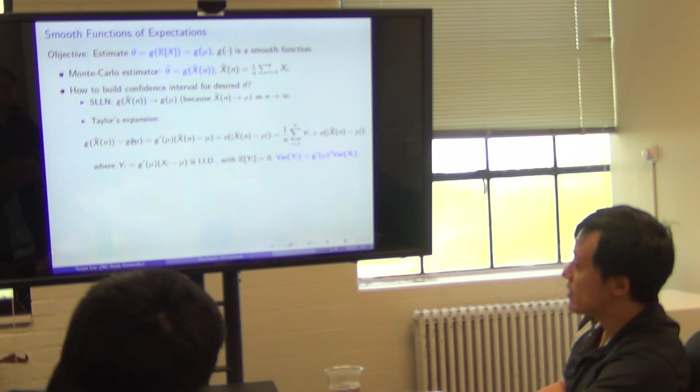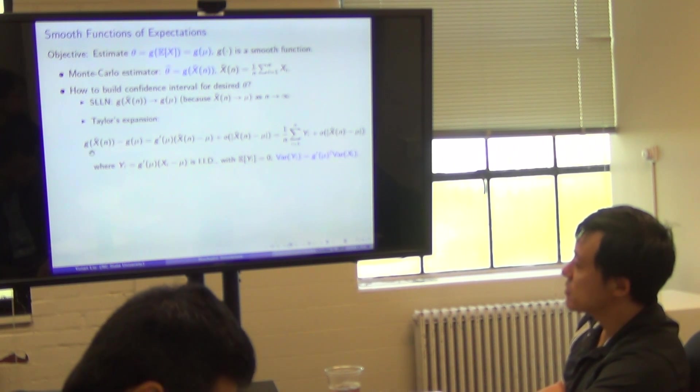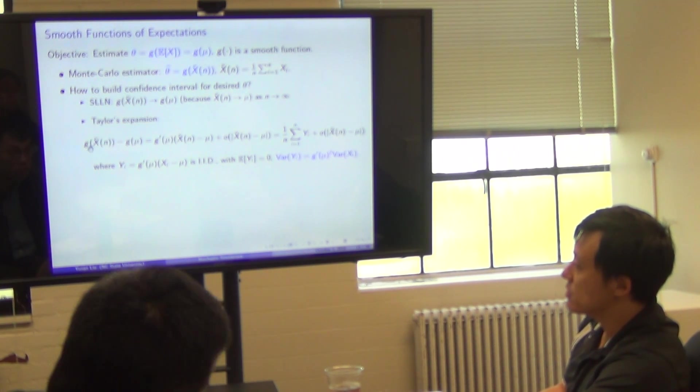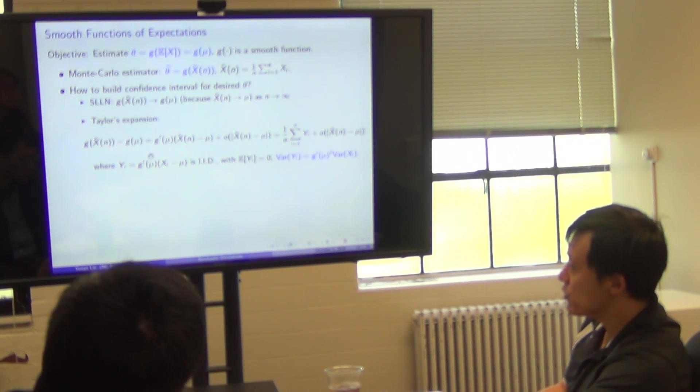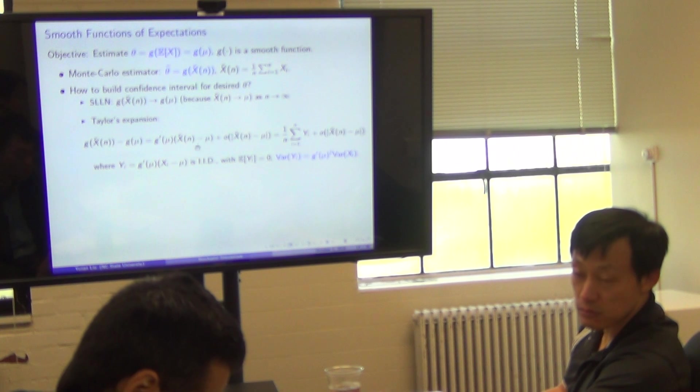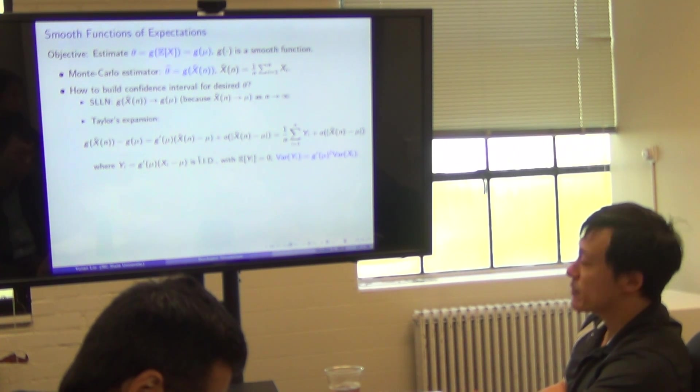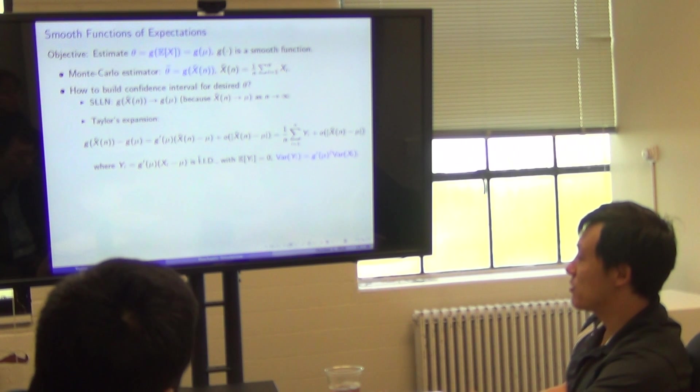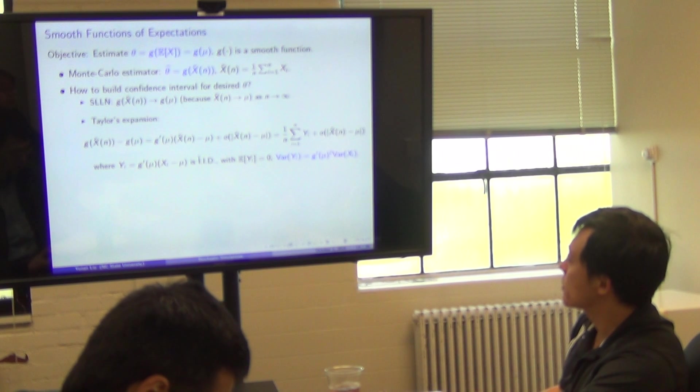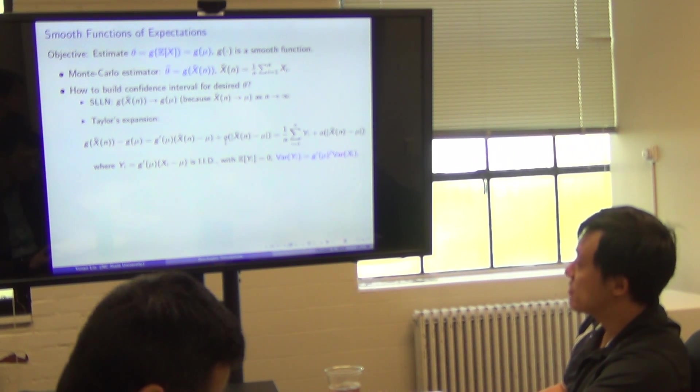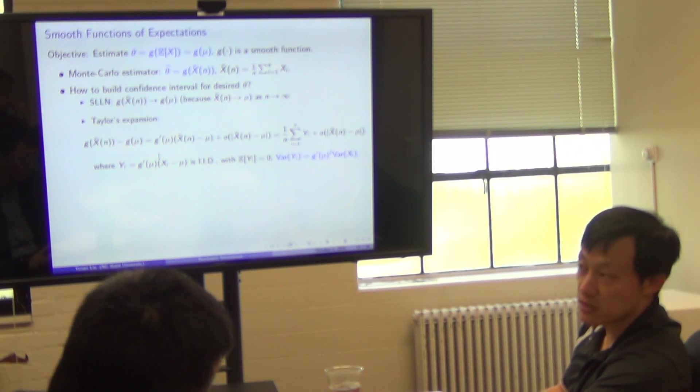So we know this guy and mu are very close when n is large enough. So let's apply Taylor's expansion for g function. We do Taylor's expansion at the point mu. So this guy is equal to, the difference is equal to derivative at mu multiplied by the difference. Taylor's expansion basically approximates your nonlinear function g by a linear function in a small neighborhood. Plus a little o term. This little o term is really something that is incomparable to this first order term.